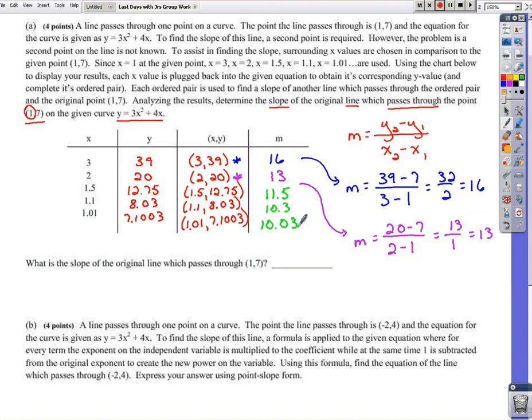Since we selected x values that are getting closer and closer and closer to this x value of 1 at the original point, if we look at the trend that the slope follows, we could assume that if we eventually get to that point and had to find the slope of that line, that the slope of that line appears to be 10 in this case, right, because that's what the numbers trend towards. So this problem, although a little tedious, is really just about finding some slopes and some lines and looking at a pattern. If you can do that, you can at least get started in calculus.